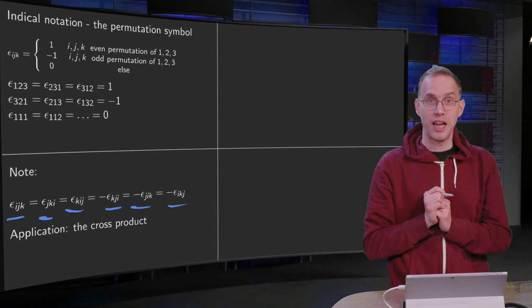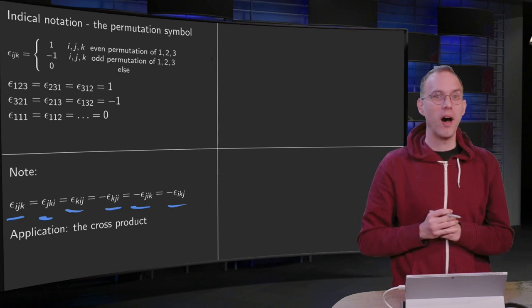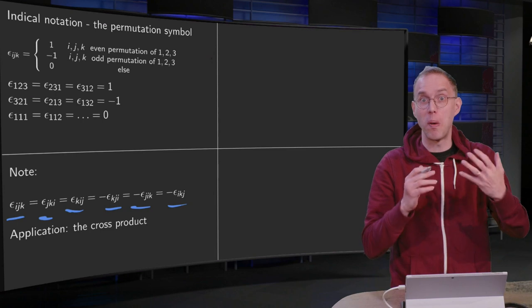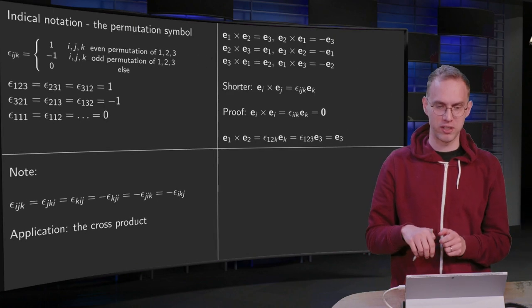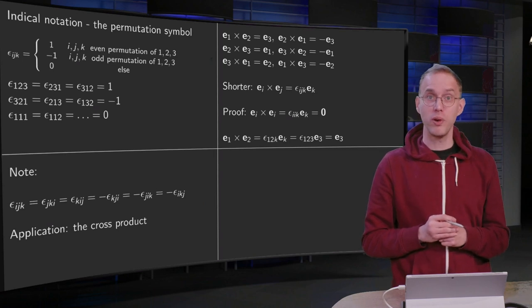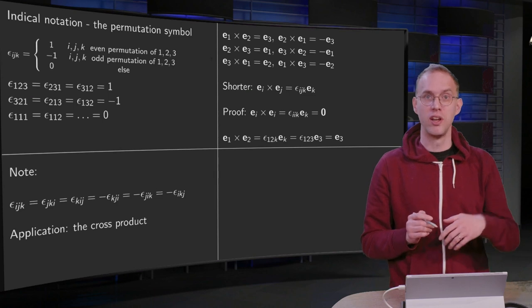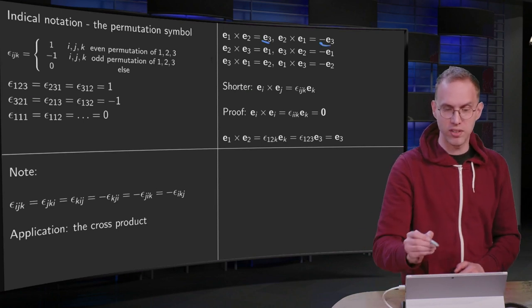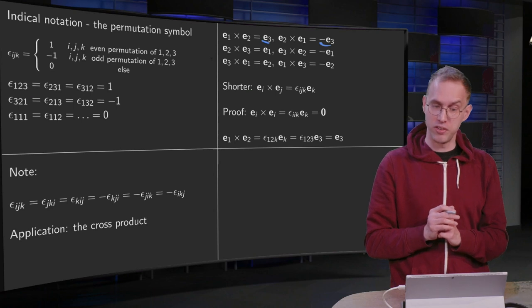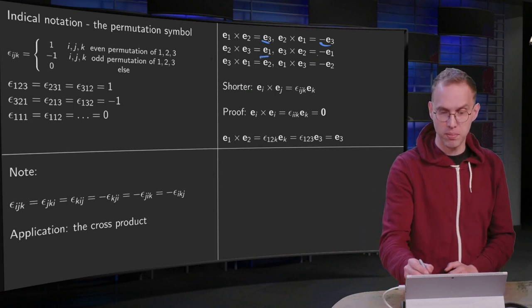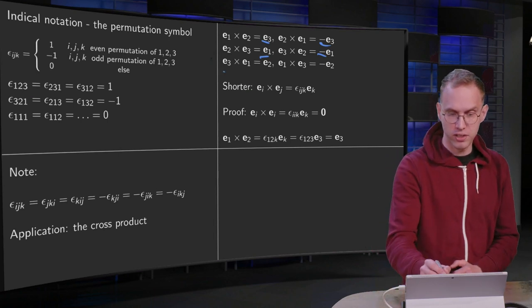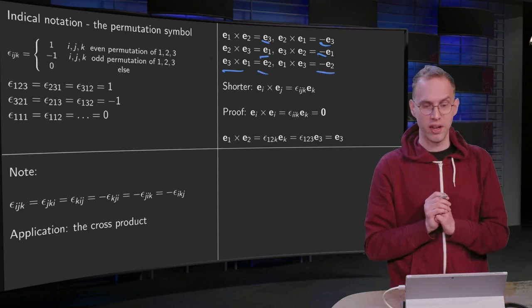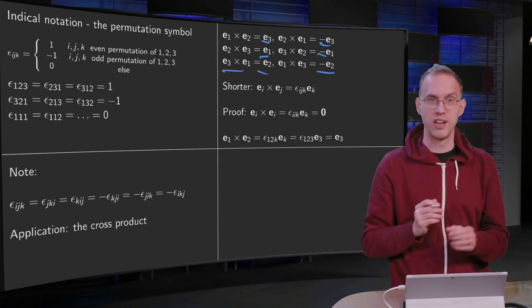Why on earth do you want to use such a strange and seemingly complicated thing? Well, let's take a look at the cross product. You know how the cross product works for standard unit basis vectors: e1 cross e2 gives e3, and if you flip the order you get minus e3. The cross product of e2 cross e3 equals e1, and flipping gives minus e1. And e3 cross e1 gives e2, again picking up a sign if you flip the order.